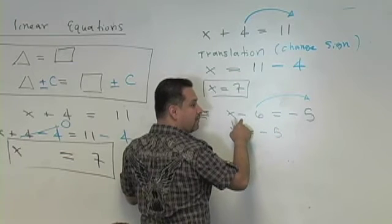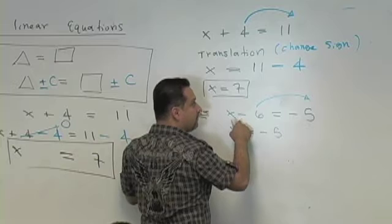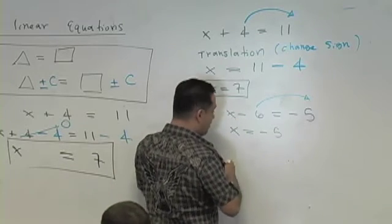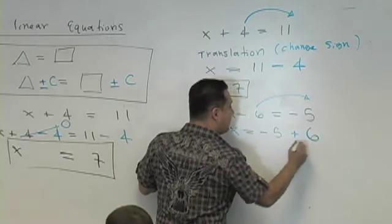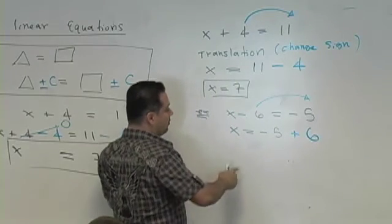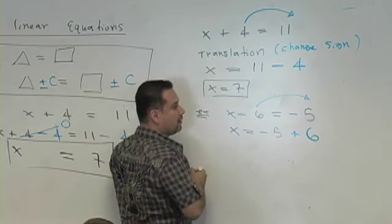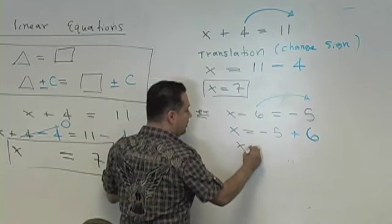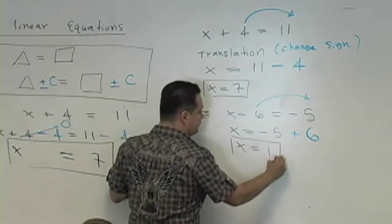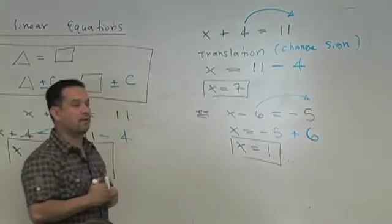The sign in front of it's negative, so when I move it, it's plus 6. What's negative 5 plus 6? It is 1. You guys have solved this equation for x.